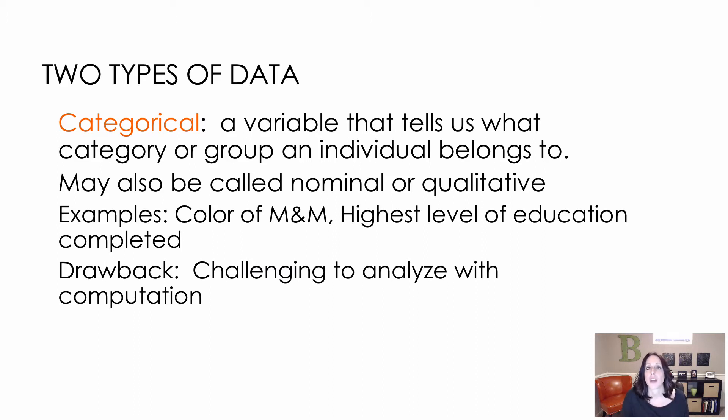Examples: colors of M&Ms, the highest level of education that you've completed. The drawback of a categorical variable is that it's kind of challenging to analyze because we're not dealing with numbers. We can't find the average, none of those things. So it's a little bit harder to deal with in terms of those things.